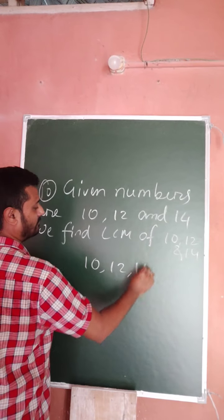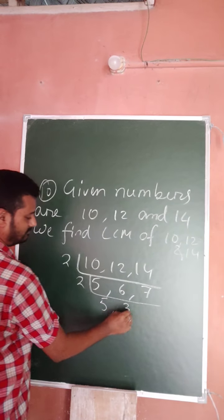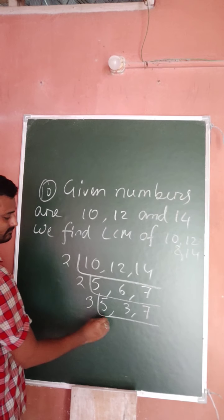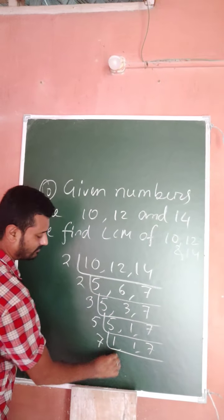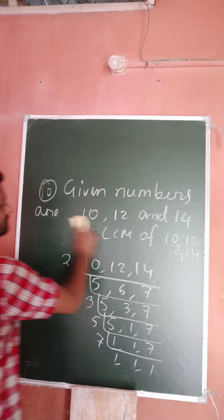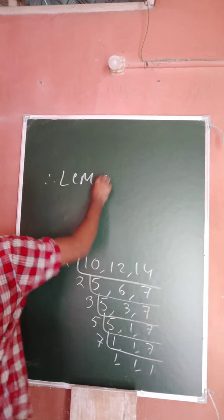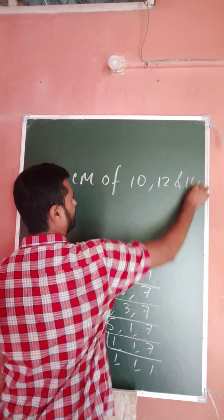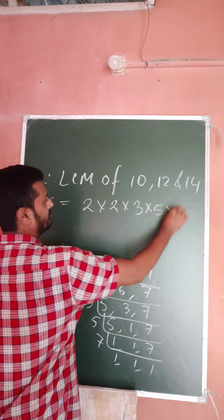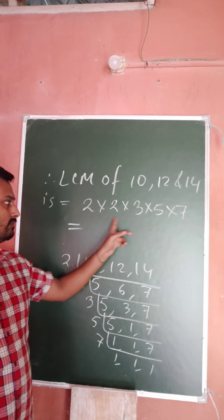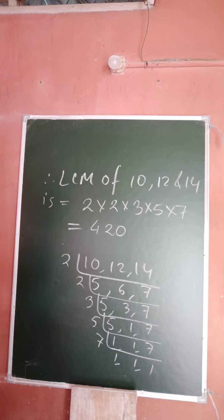For 10, 12, 14: 2 and 5 make 10; 2 and 6 make 12; and 2 and 7 make 14. Dividing through: 5, 1, 1 and 7, 1, 1. So the LCM of 10, 12, and 14 is 2 × 2 × 3 × 5 × 7. That gives us 4 × 3 = 12, × 5 = 60, × 7 = 420. So 420 is the lowest common multiple.